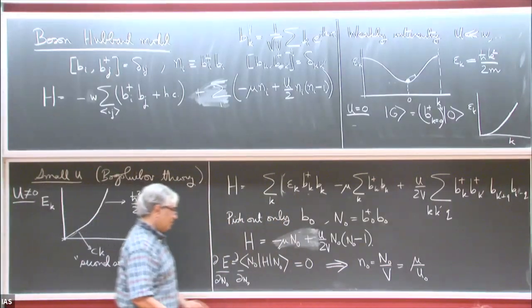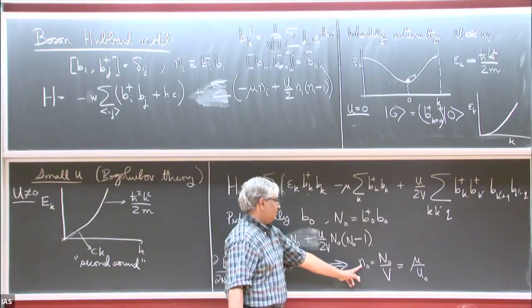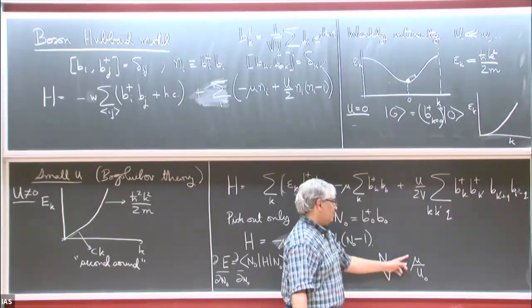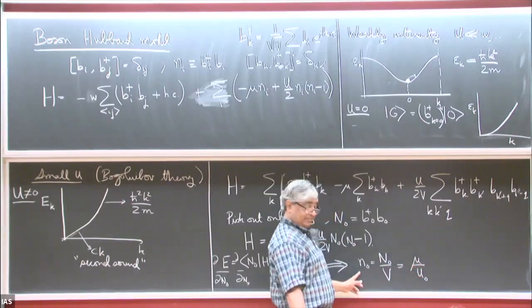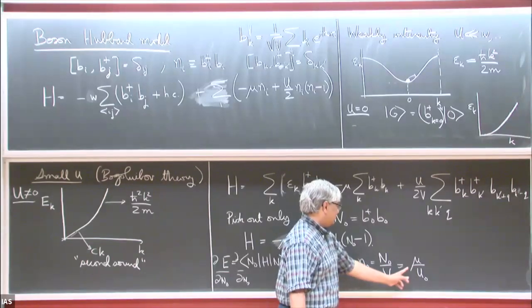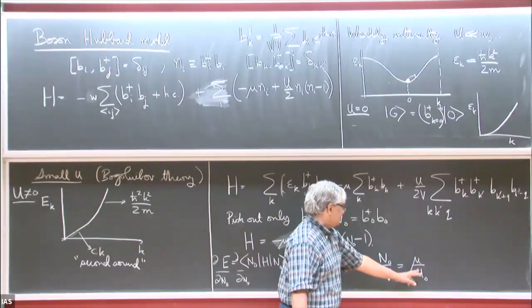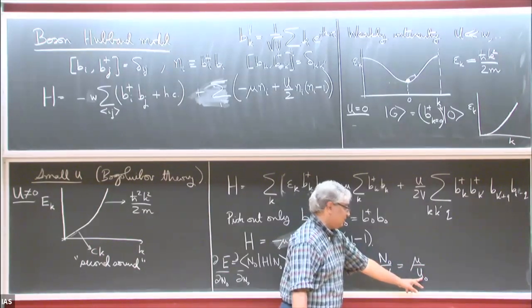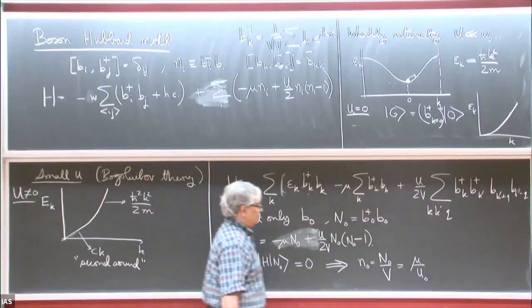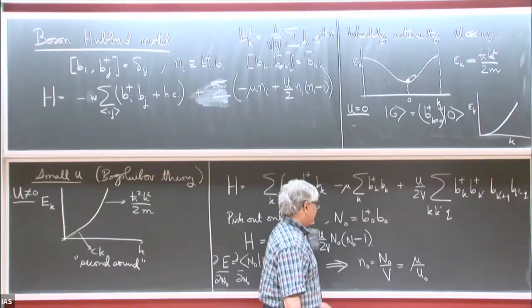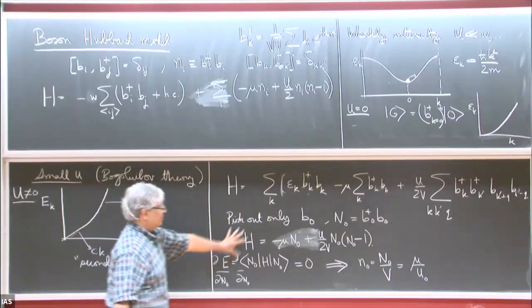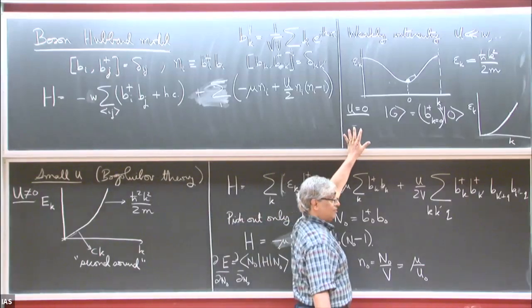So we always find a macroscopic number of particles in the zero-momentum state, and that's determined by the chemical potential. Notice this is very singular as U goes to zero — mu has to be proportional to U in a particular way to get the right density. But that's the preferable way to work.